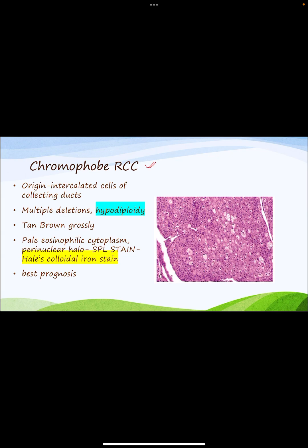Chromophobe renal cell carcinoma originates from the intercalated cells of the collecting ducts and is associated with multiple deletions leading to hypodiploidy — an important feature. Grossly, there are tan-brown masses in the kidney. Microscopically, cells are called chromophobe because the cytoplasm is pale eosinophilic. The cytoplasmic and nuclear membranes are very prominent, and there is a perinuclear halo. Special stain used is Hale's colloidal iron stain, important for MCQs and viva. Chromophobe RCC has the best prognosis among RCC subtypes.